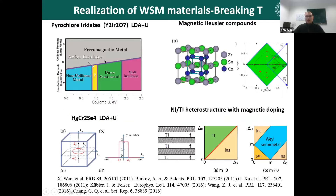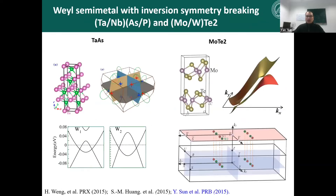At the beginning, people proposed the concept of Weyl semimetals formulated in magnetic compounds, and later proposed many other magnetic Weyl semimetals. But so far, none of these were really confirmed by experiment. Later, people tried to realize Weyl semimetals in non-magnetic systems but with inversion symmetry breaking.